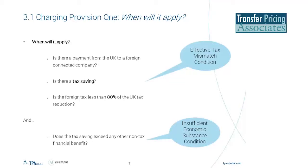Question from one of our attendees: will the Diverted Profit Tax also be applicable to residents of the Isle of Man? When we're looking at Charging Provision 1, we're looking at a UK company making a payment to a foreign company. If that foreign company were in the Isle of Man, then yes, you would be looking at that relationship. But the Isle of Man doesn't form part of the UK for corporation tax purposes. So if you just had an Isle of Man company in your group and no other connection with the UK, and the Isle of Man company made a payment to a connected party, then that wouldn't be within the regime.